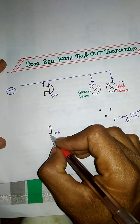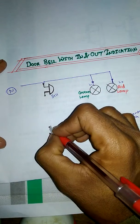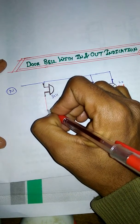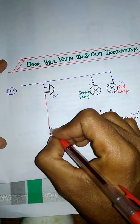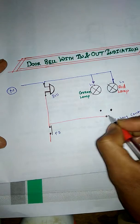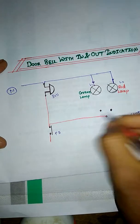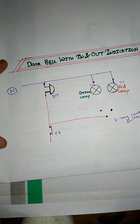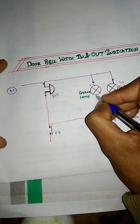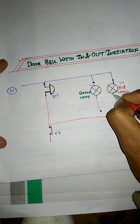Now for phase. Give phase to the push button and connect the output terminal with the buzzer, and loop it with the incoming terminal of the two-way control switch. Give the two terminals of the two-way switch to red and green lamp respectively.